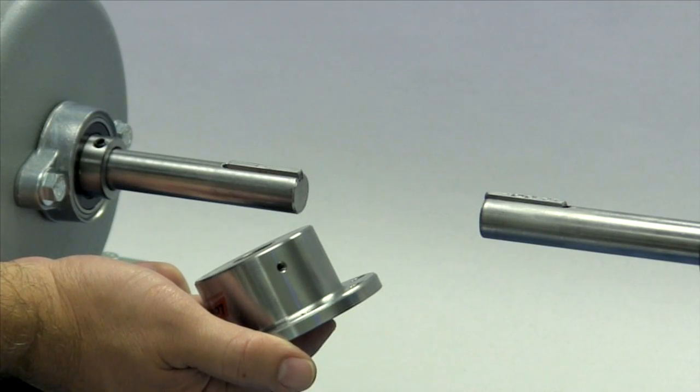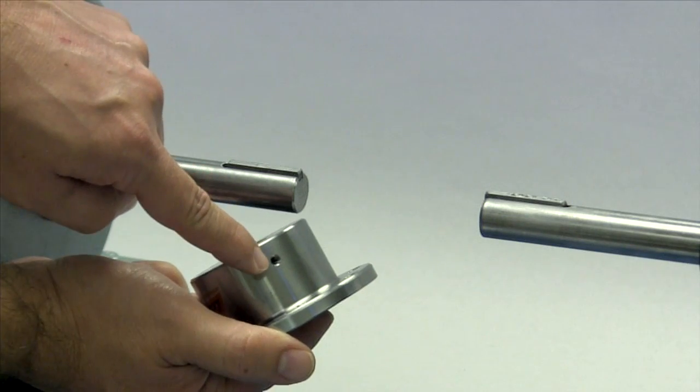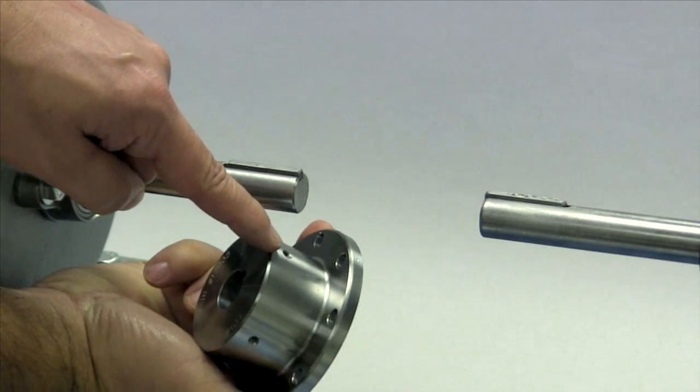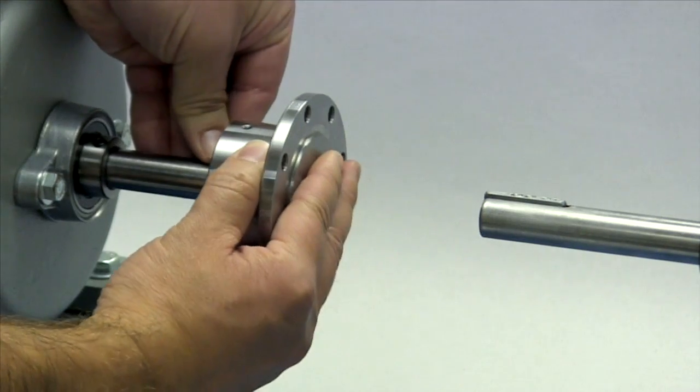Please note that Lovejoy grid hubs sizes 1020 through 1090 are manufactured with two set screws and a clearance or slip fit. These hubs should slide onto the shafts with little or no difficulty.